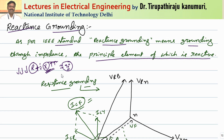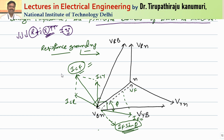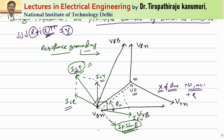Before going to reactance grounding, let us review resistance grounding from the last class. In resistance grounding, capacitor currents ICR and ICY are present, and the resultant current ICF is due to the capacitive currents of the healthy two phases. Because of the faulty phase voltage, the current lags by angle phi, which is decided by the reactance of the transmission line — transformers, machines, and all elements — plus the resistance connected in the neutral circuit.